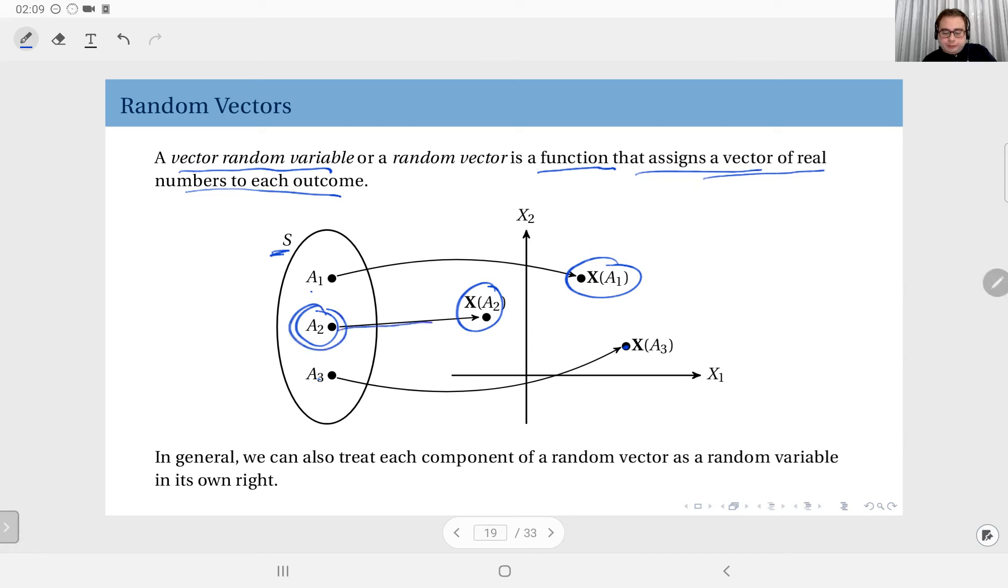When you map outcome a2 to this vector, what you are saying is when the outcome is a2, I construct a random vector whose first component is a random variable mapped to this value, and the second component is another random variable mapped to this value. We can also treat each component of a random vector as a random variable in its own right. Each component X1, X2, X3, etc., however many you have, each of them is a separate random variable.